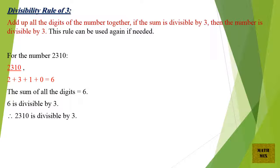Divisibility Rule of Number 3. Add up all the digits of the number together. If the sum is divisible by 3, then the number is divisible by 3. This rule can be used again if needed. For the number 2310, 2 plus 3 plus 1 plus 0 equals 6. The sum of all the digits equals 6. 6 is divisible by 3. Therefore, 2310 is divisible by 3.